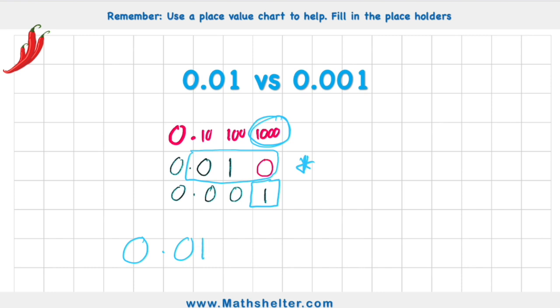So therefore 0.01 is greater than 0.001. Or in other words, 0.001 is less than 0.01. Both correct.